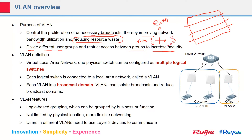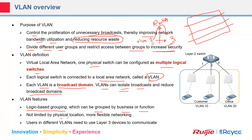Users on VLAN 2 can talk to VLAN 3 if you allow routing between those VLANs. One physical switch can be configured as multiple logical switches — each logical switch connected to a virtual LAN called a VLAN. Each VLAN is a broadcast domain and can isolate broadcasts and reduce broadcast domains. VLAN features include logic-based grouping — not physically grouping users but grouping by business function — not limited by physical location, enabling more flexible networking.